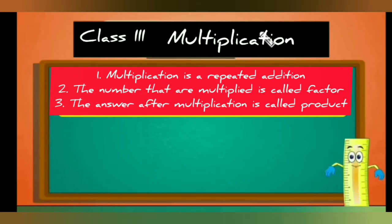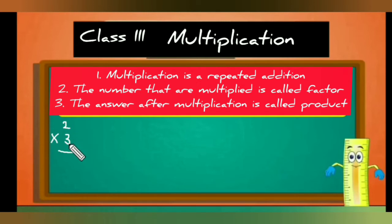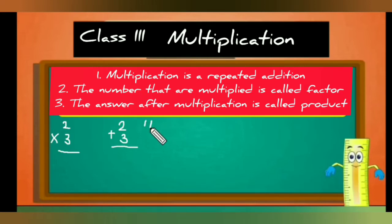Let's see our first example: two multiplied by three. Here, two and three are the factors. Now let's see the difference between addition and multiplication. Two plus three — when doing addition, we are simply adding the numbers: two plus three equals five.